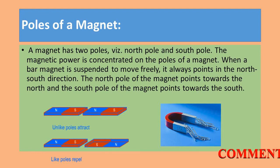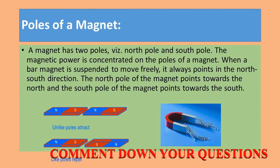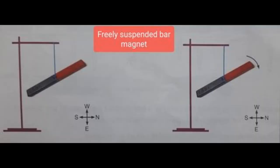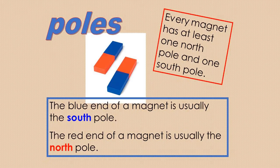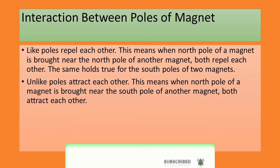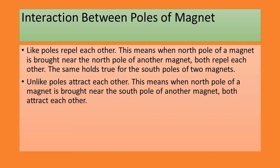When a bar magnet is suspended to move freely, it always points in the north direction. If we keep the bar magnet free, it will always point towards the north direction. The north pole of the magnet points towards the north and the south pole of the magnet points towards the south. Like poles repel each other — when the north pole of a magnet is brought near the north pole of another magnet, both repel each other. The same applies to the south poles of two magnets.